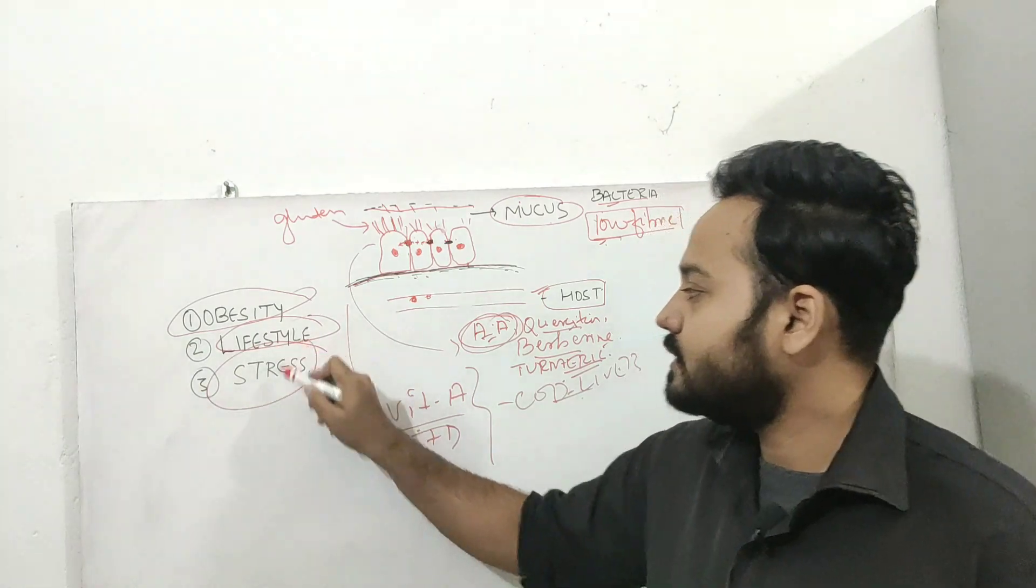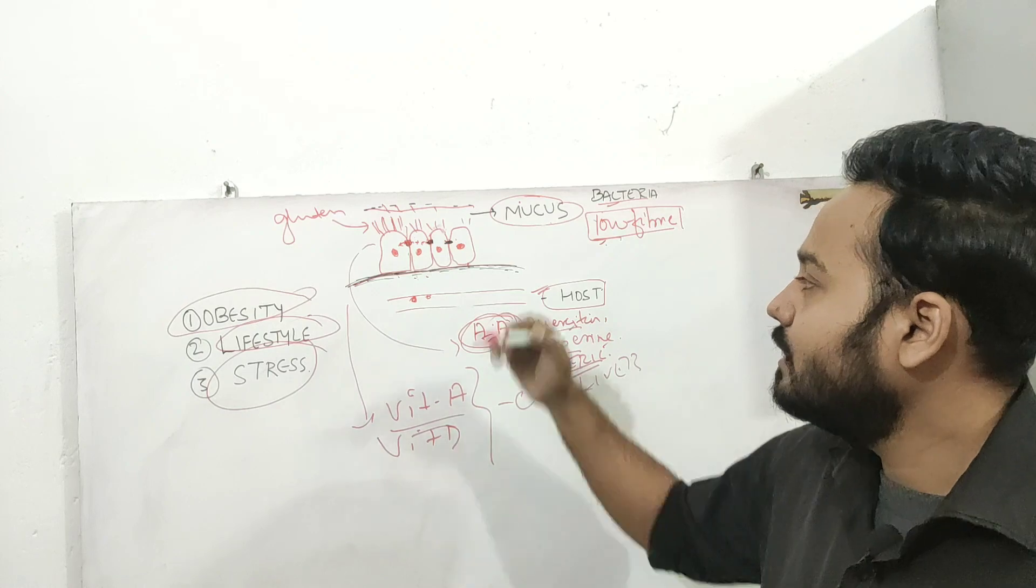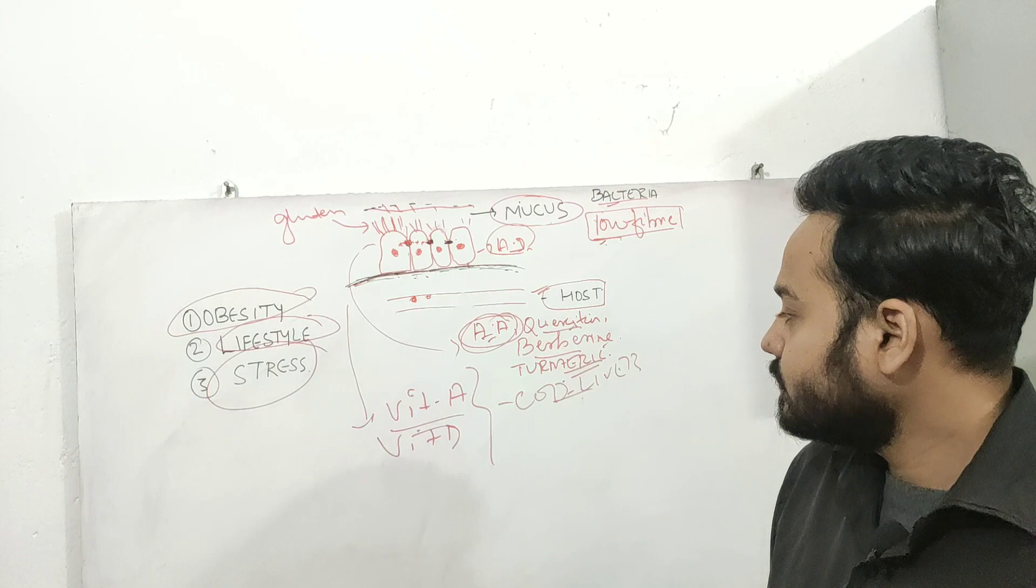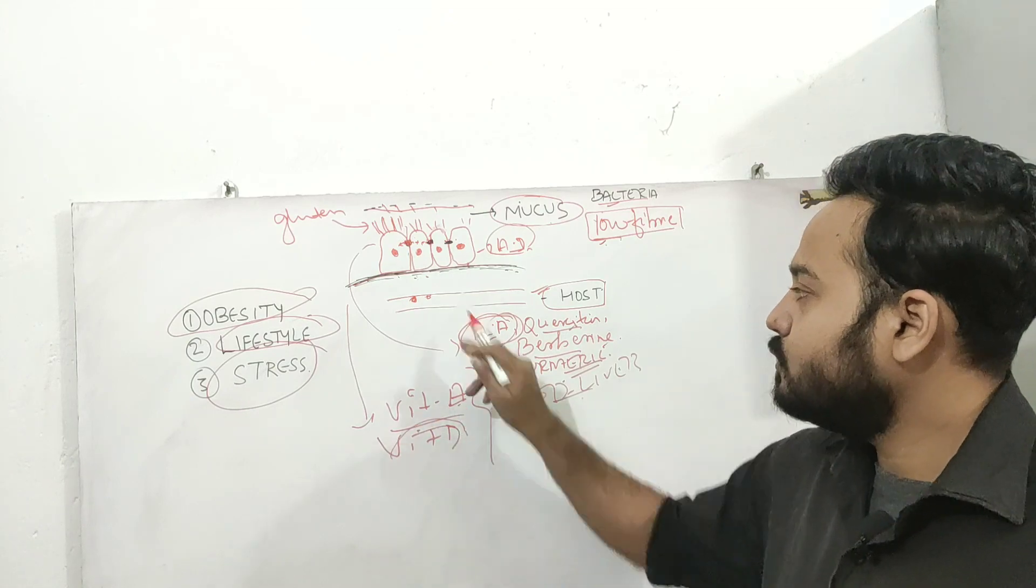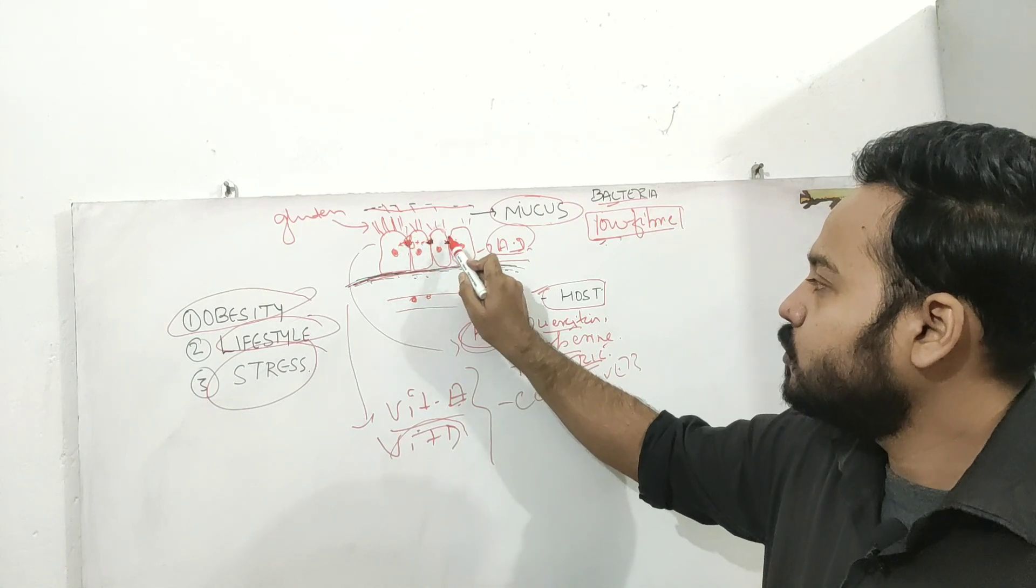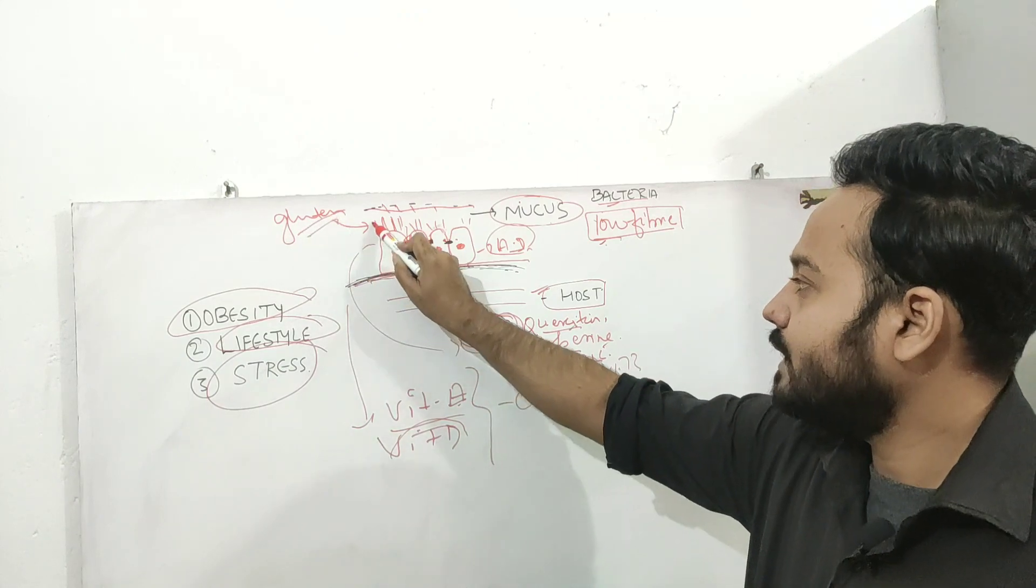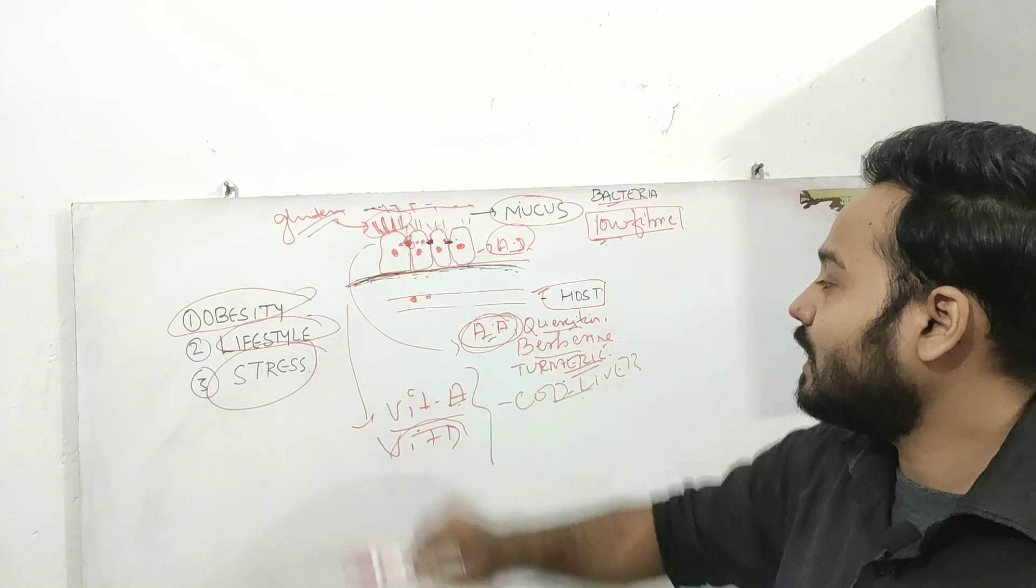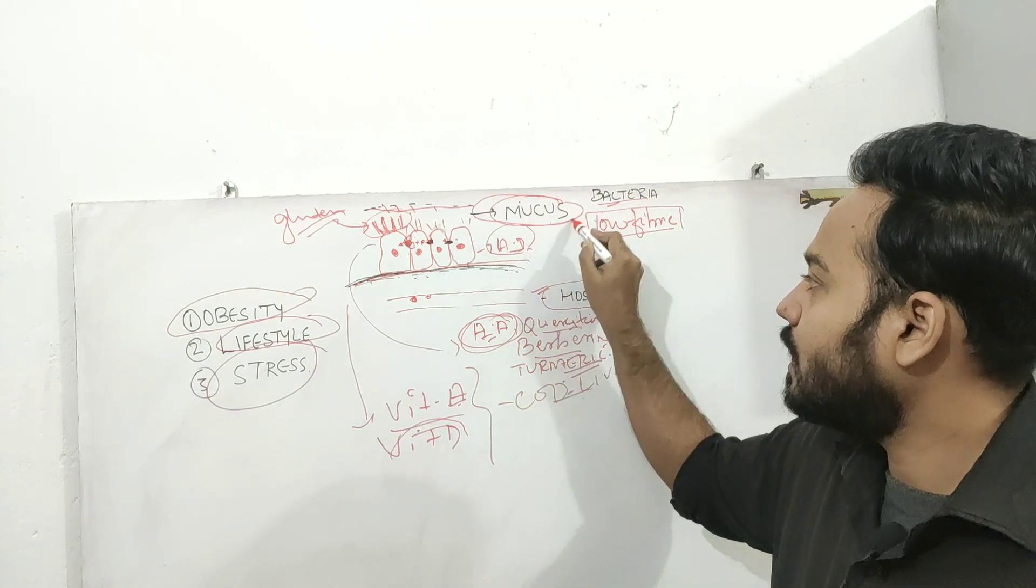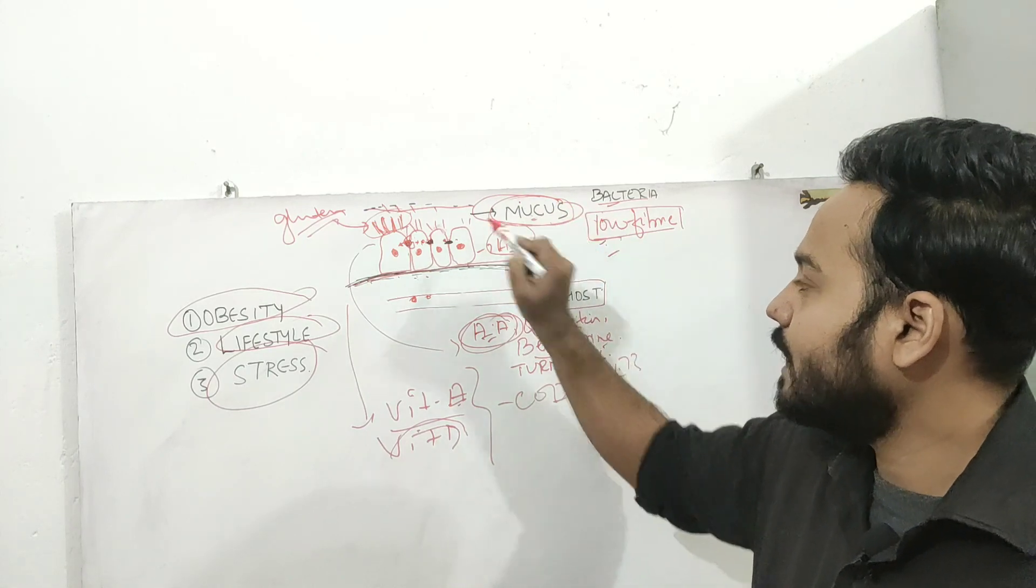Then third is stress. Stress is another important thing that can cause increased intestinal permeability and can lead to autoimmune disorders. So vitamin D and vitamin A to maintain the structural integrity, high quality proteins to maintain the tight junctions, avoiding foods like gluten that can cause destruction of the villi, and eating fiber-rich foods so that you do not allow mucus-eating bacteria to gain access.